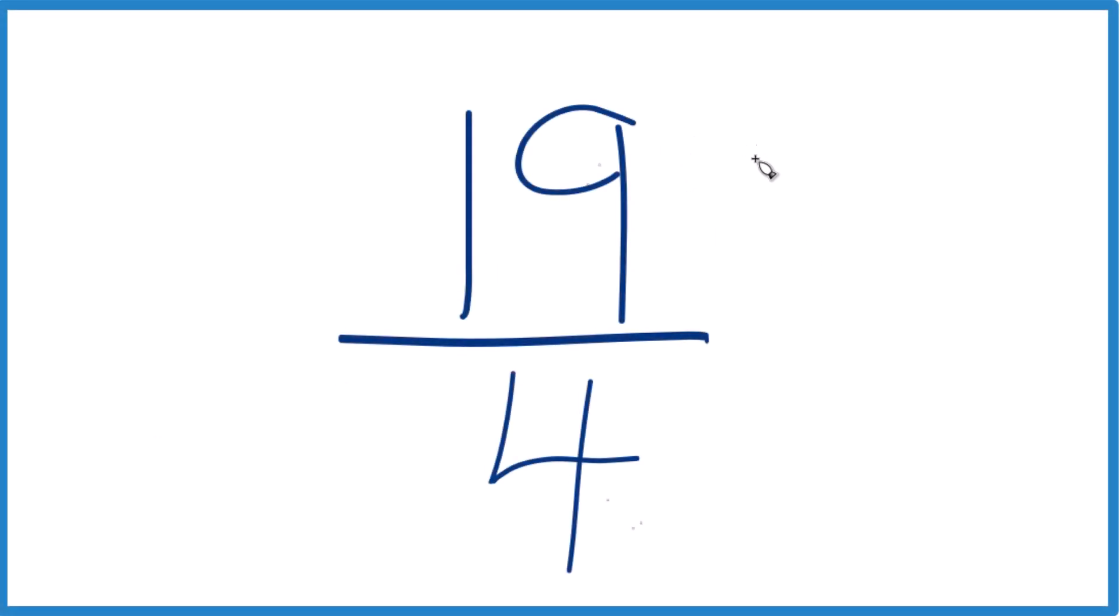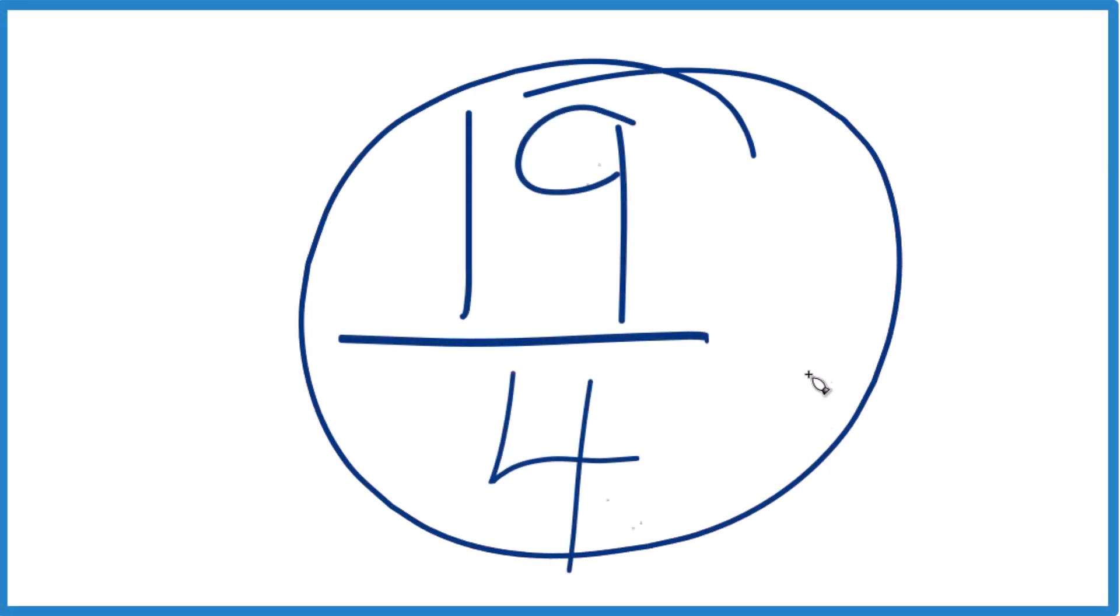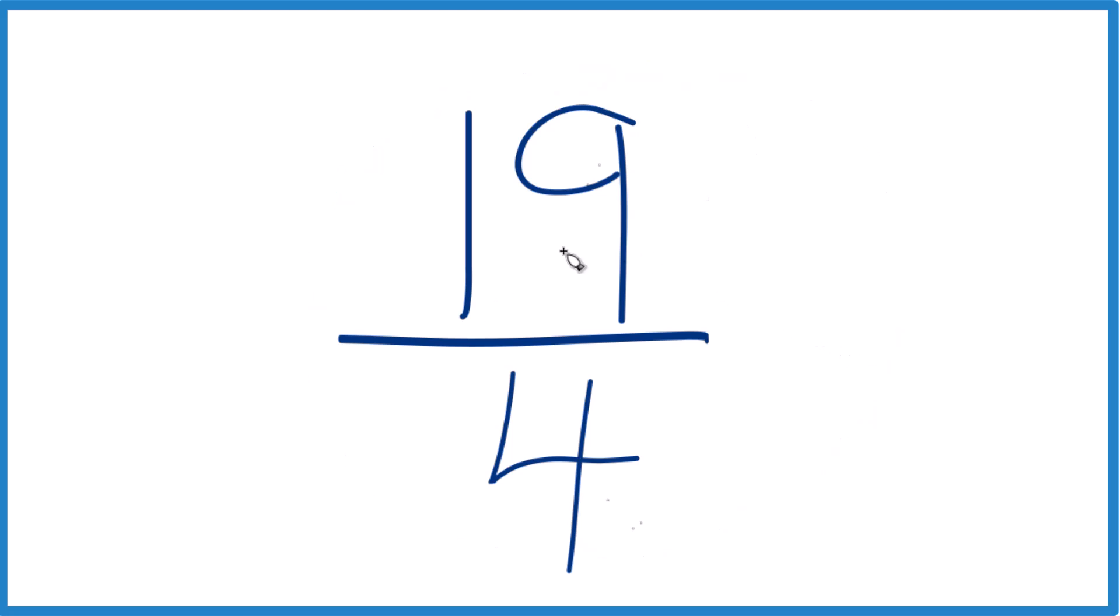Here's how you simplify the fraction 19 fourths, and we'll also write this as a mixed number. So to simplify the fraction,